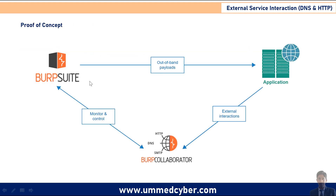For the POC, in this process, we send a payload along with the genuine request to the targeted server. After that, if the targeted server starts interacting with the specified payload server, then the Burp Collaborator will analyze the received request from the targeted server and post a copy of the report to the security tester.